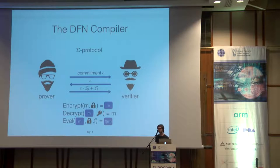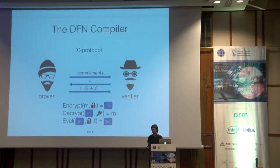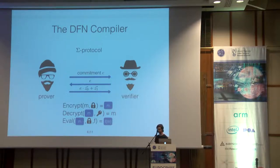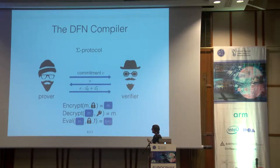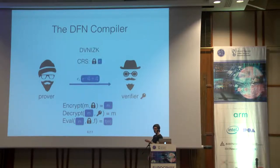The key observation at the heart of the transformation by Damgård-Fazio-Nicolosi is the following. Suppose you have an additively homomorphic encryption scheme: you can encrypt with the public key, decrypt with the secret key, and evaluate any linear function homomorphically to get an encryption of f applied to the plaintext. If you have that, you can make this interactive scheme non-interactive simply by encrypting the challenge before the start of the protocol and sending it in advance within a common reference string.